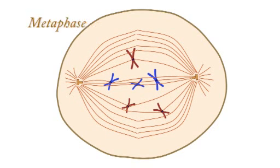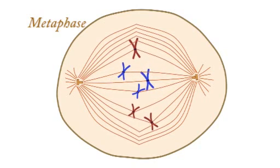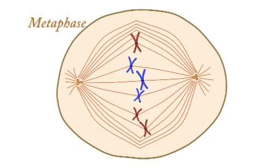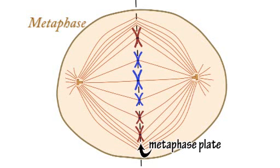In metaphase, a tug of war between the spindle fibers pulls the chromosomes until their centromeres line up together along a central equatorial plane through the cell, called the metaphase plate.